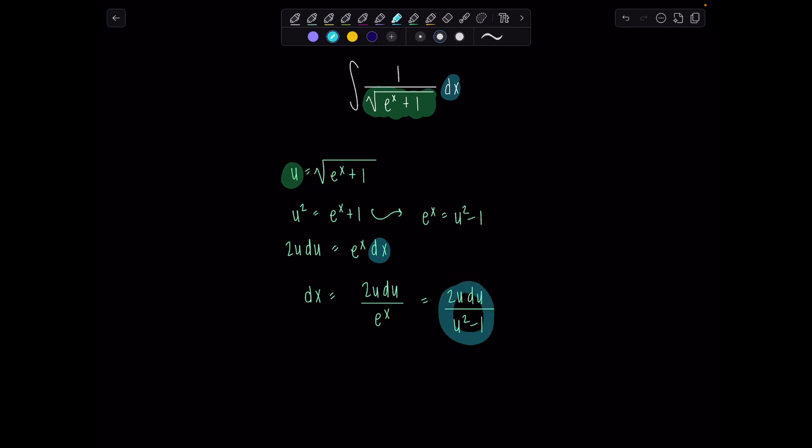So the entire differential dx gets replaced with this expression here, 2u du over u squared minus 1. Okay, so now we're ready. Let's rewrite our entire integral in terms of u. So we'll have 1 over u. That's this part here, 1 over u. And then instead of dx, I'm going to replace it now with 2u du over u squared minus 1.